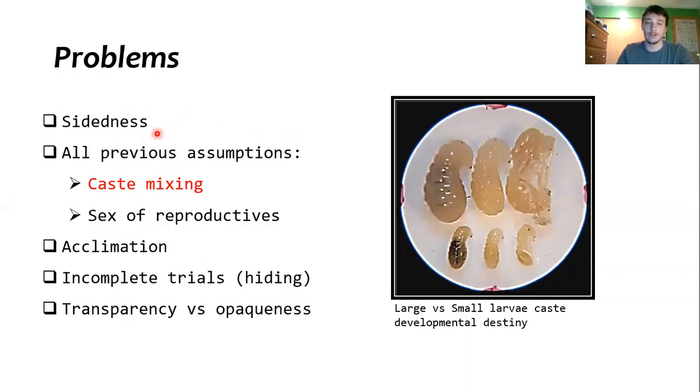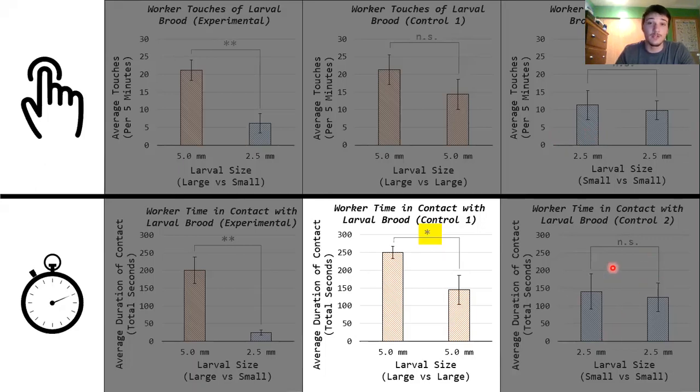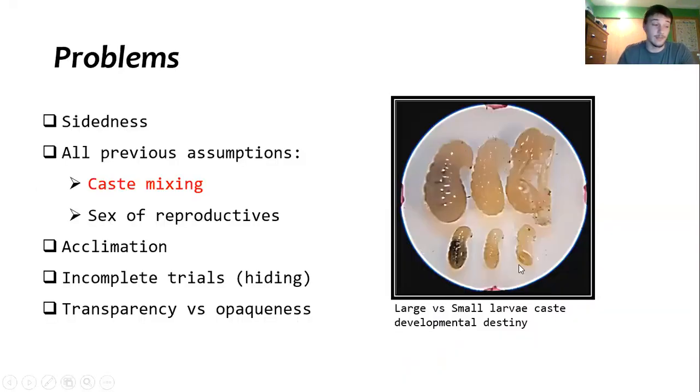But yeah, some problems. Sidedness might have played a role. I don't think in all cases because it only happened in that one condition for that one measurement of the time spent but not the touches. But still there could be a side bias going on. And all those assumptions I outlined beforehand might be happening. The biggest one being mixing of the caste. I know that for sure now they are not a type of ant that is going to discriminate or segregate larvae predetermined to become a different caste. They kept large and small together, sterile workers and reproductives together. Which means that would play a role. But also the sex of these reproductives could also be accounting. Because if you look over here, there's never a significance between sterile workers because they're always going to be female. But when they are larger and reproductive, you might see a significant difference. And that's because you can have some that would be female and some would be male.